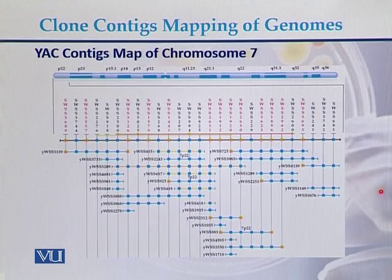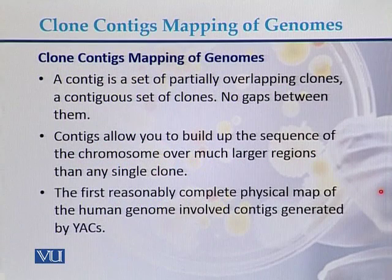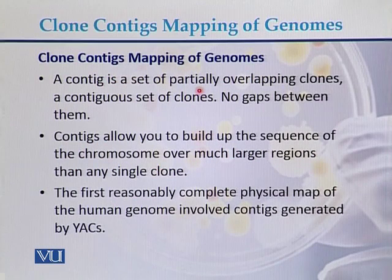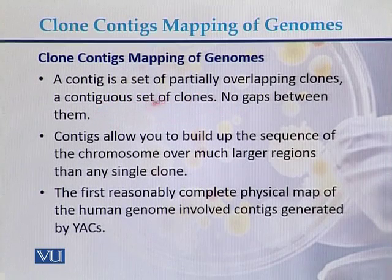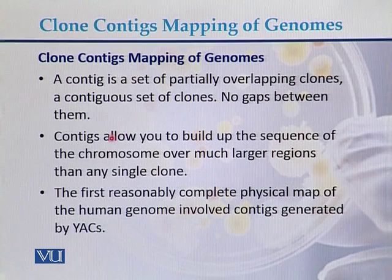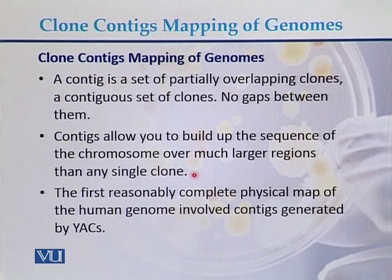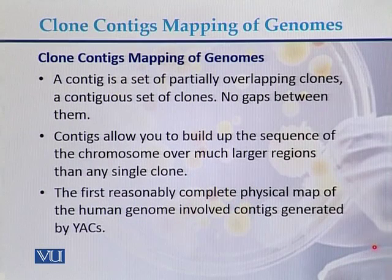This diagram is from chromosome 7. A contig is a set of partially overlapping clones — a contiguous set of clones with no gap between them, so they are continuous in nature with no gap between the yeast artificial chromosomes. Contigs allow you to build the sequence of the chromosome over much larger regions than any single clone. The first reasonably complete physical map of the human genome involved contigs generated by yeast artificial chromosomes.